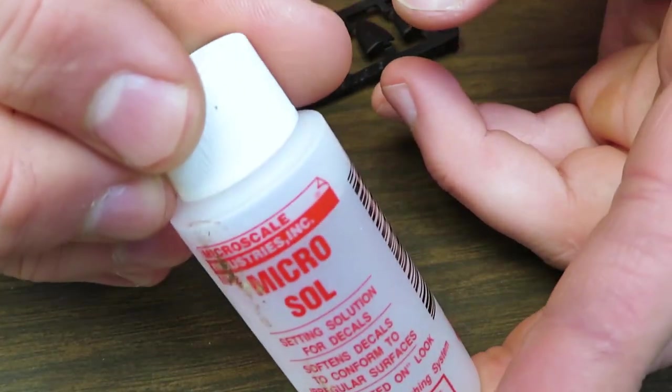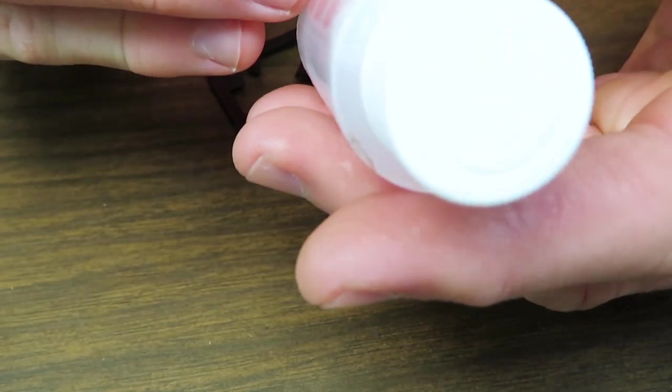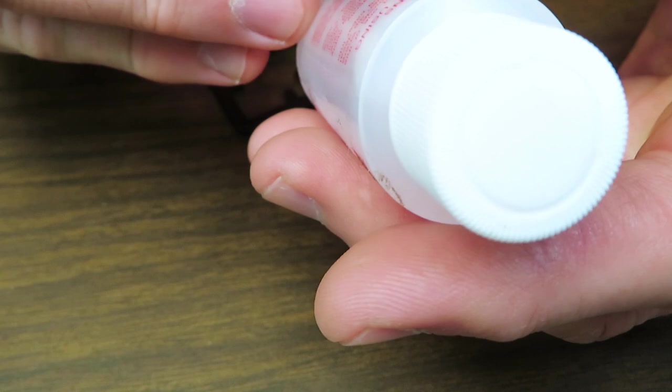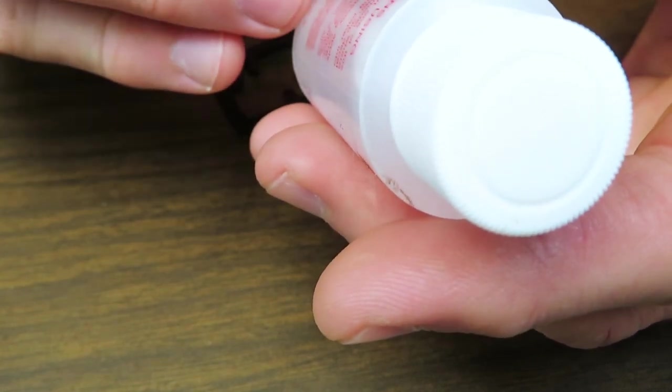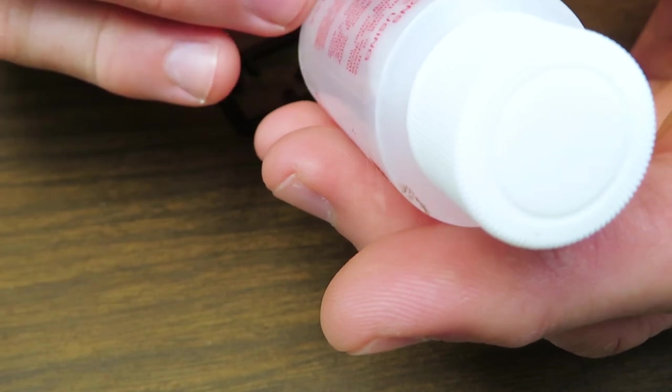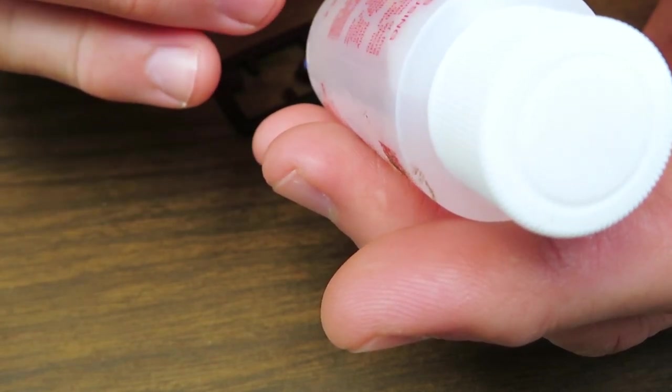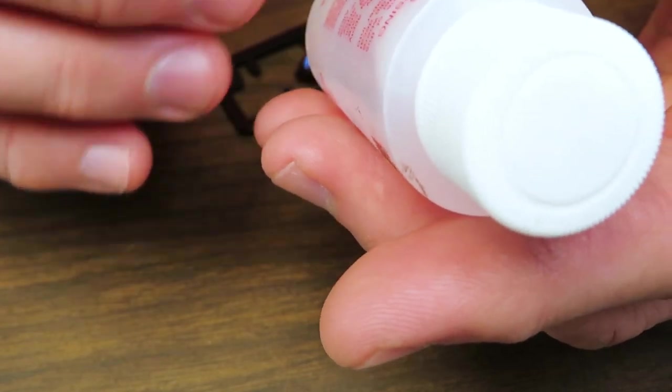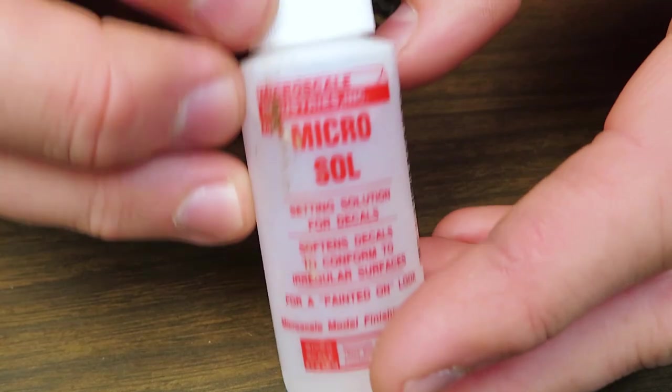So now we're going to hit it with the sol. And it even tells you here on the thing: Using a soft brush, gently apply microsol onto the decal, being careful not to move the decal during the application. Do not touch decal after applying microsol, as the decal is now soft and can easily be distorted. Allow decal to dry completely. That's exactly what I was going to tell you, except they said it better.